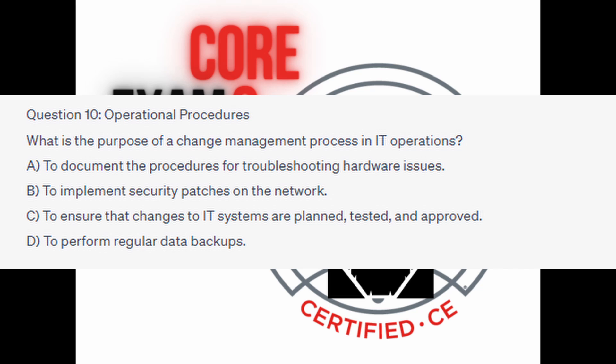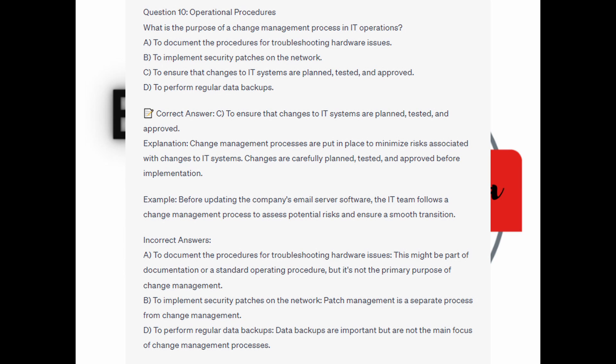You now have 5 seconds. And the correct answer is C: to ensure that changes to IT systems are planned, tested, and approved. Change management processes are put in place to minimize risks associated with changes to IT systems — changes are carefully planned, tested, and approved before implementation. Before updating the company's email server software, the IT team follows a change management process to assess potential risks and ensure a smooth transition.